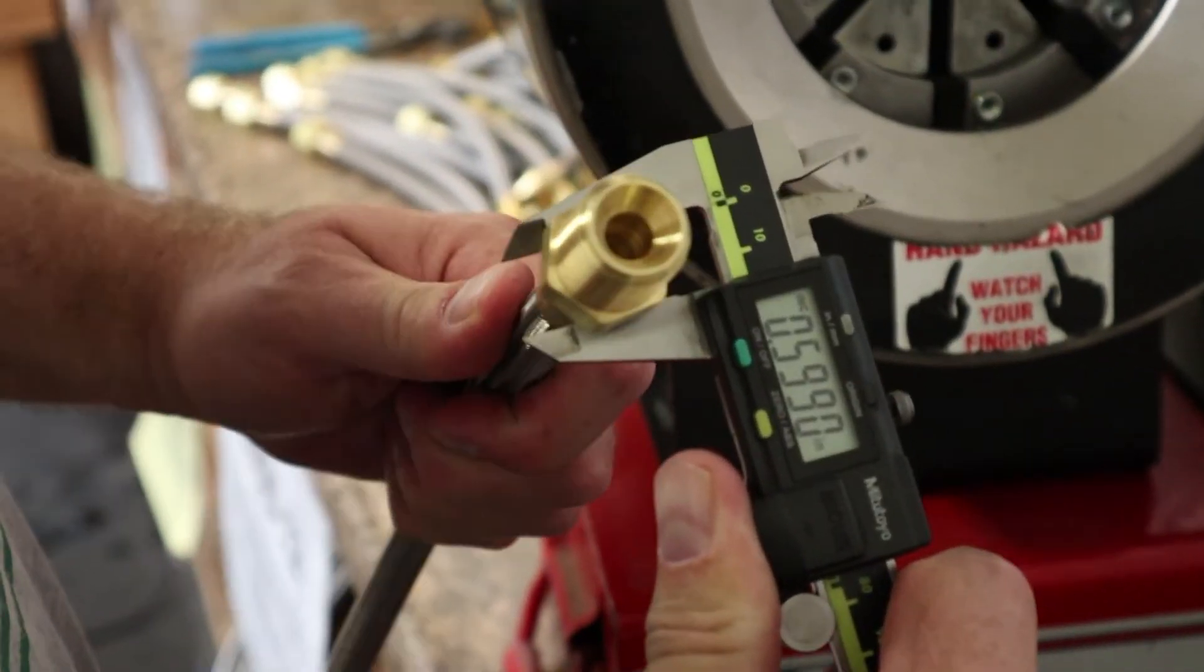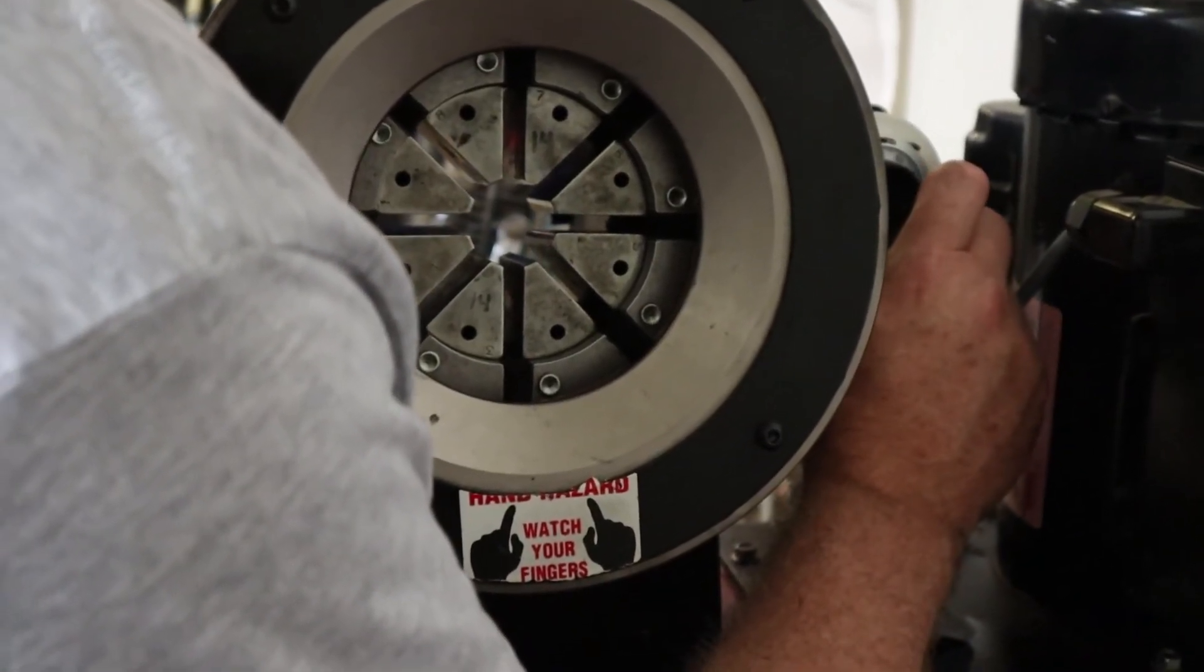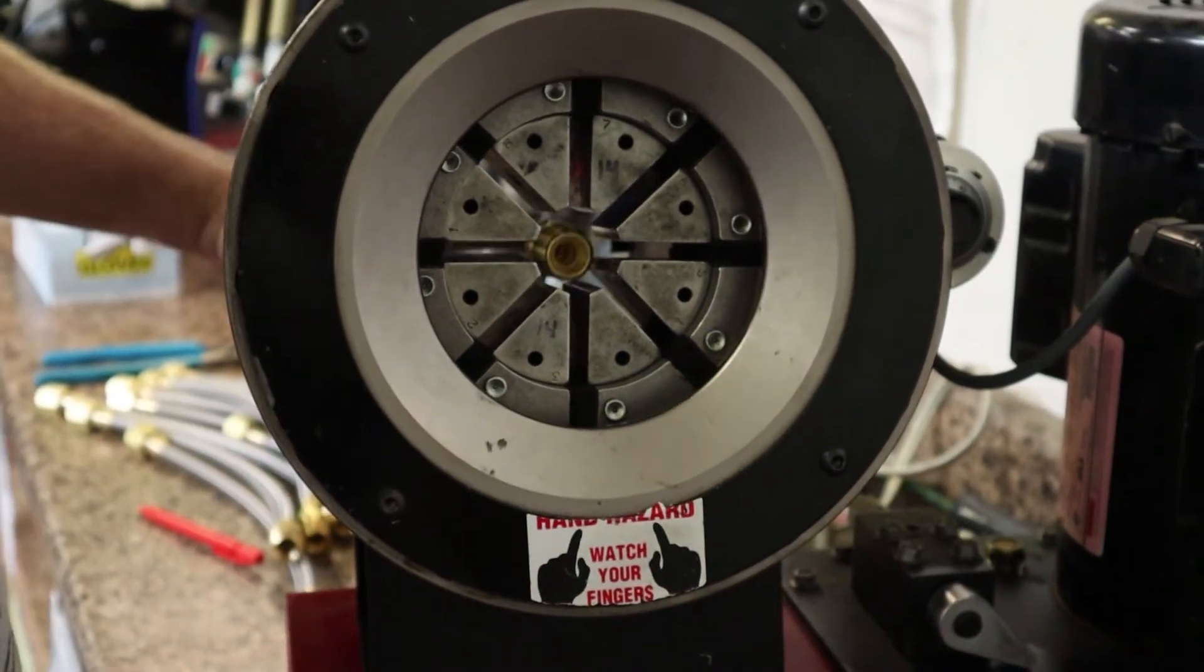Step 4. Use a pair of calibers to measure the crimp specs of the crimped hose. If under crimped, make slight adjustments to the micrometer and crimp the hose again to achieve the necessary crimp specifications.